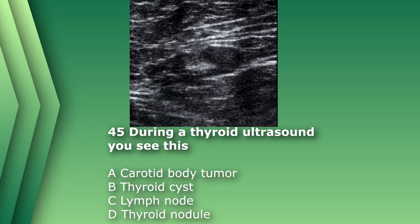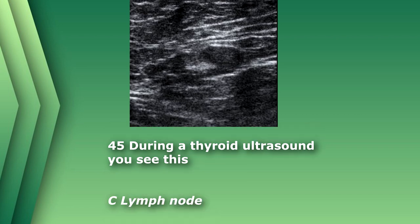Number 45. During a thyroid ultrasound, you see this. It most likely represents: A. A carotid body tumor. B. Thyroid cyst. C. Lymph node. Or D. Thyroid nodule. This is a hypoechoic oval structure with a hypoechoic center — that's the normal appearance of a lymph node. A carotid body tumor is usually located at the carotid bifurcation. A thyroid cyst is anechoic and usually within the thyroid. And a thyroid nodule is usually hypoechoic or heterogeneous. The answer is C, lymph node.